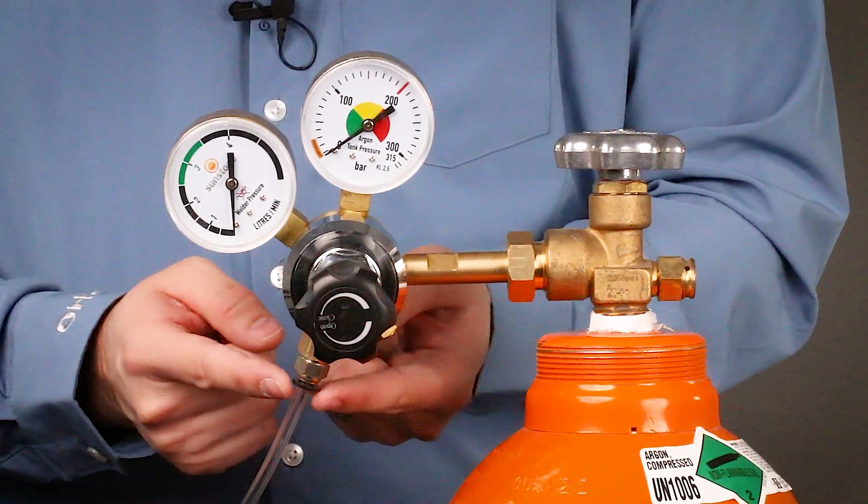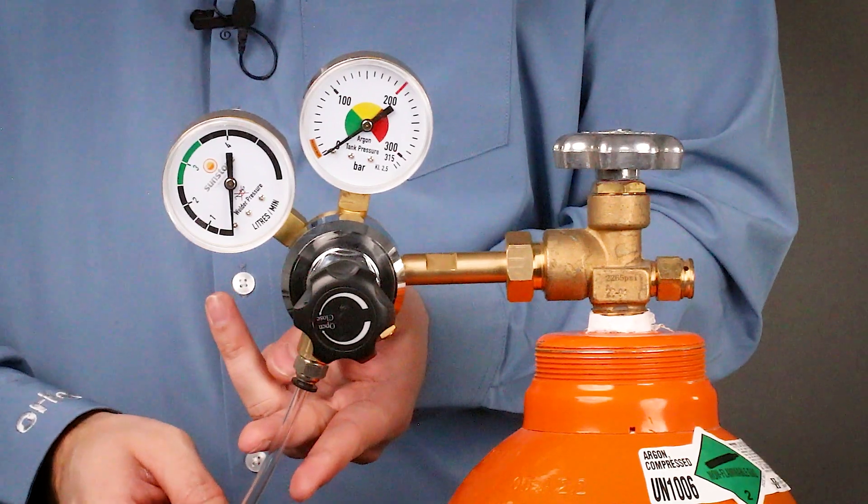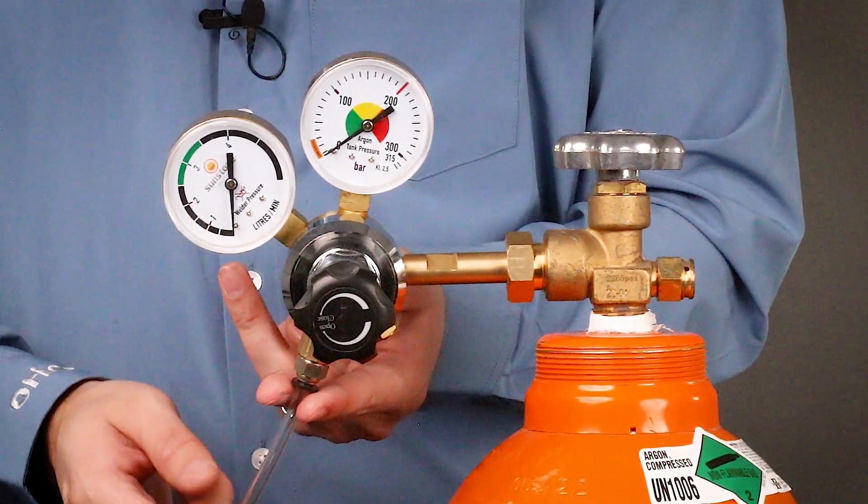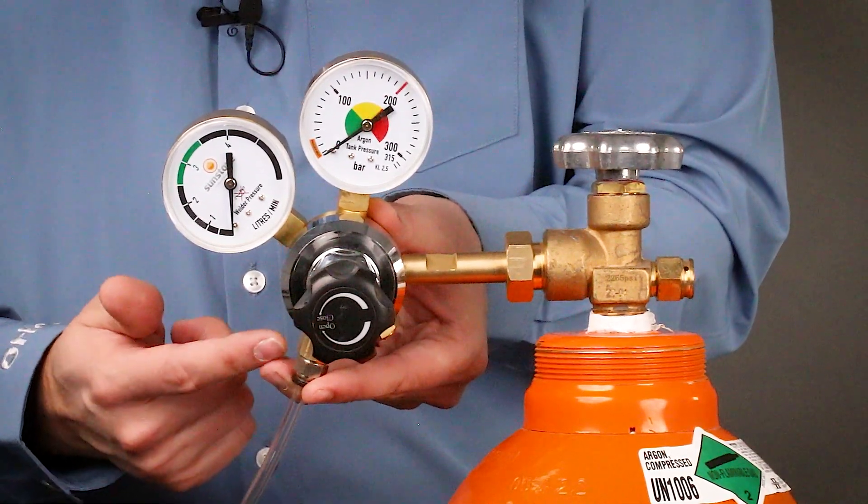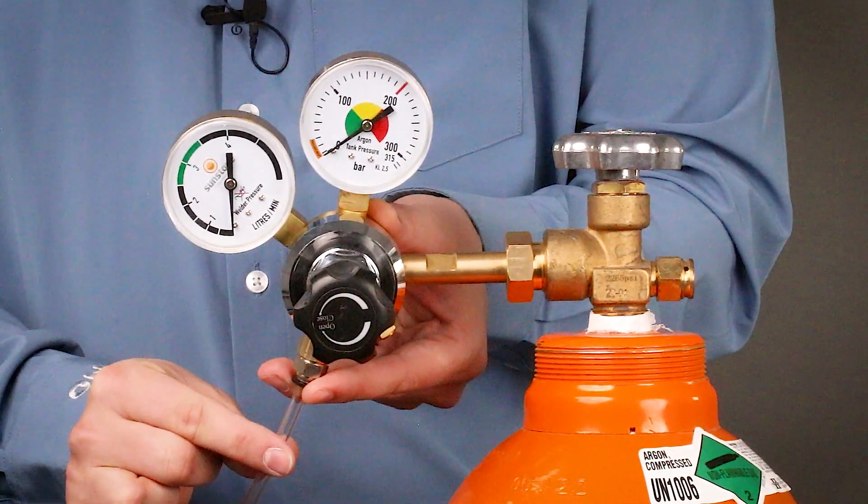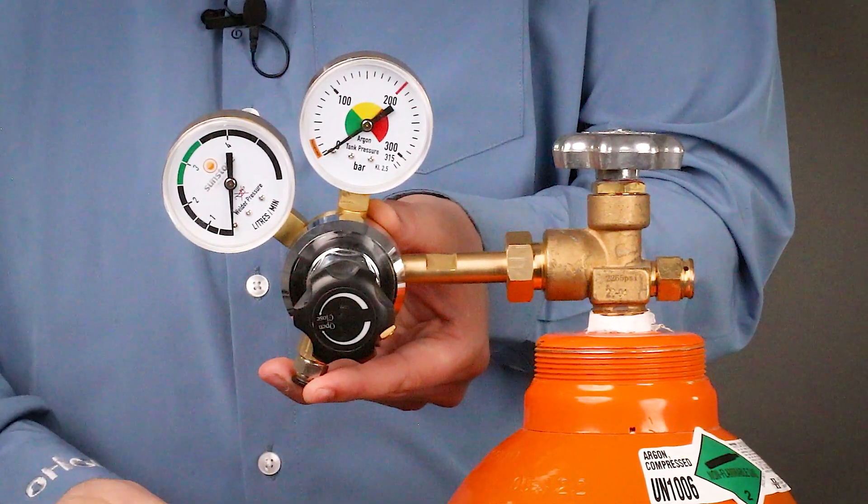They might be blue or orange or any other color. We use two fingers and push up towards the regulator. This will disengage the teeth holding the argon hose in the regulator, and it should freely and easily come out.